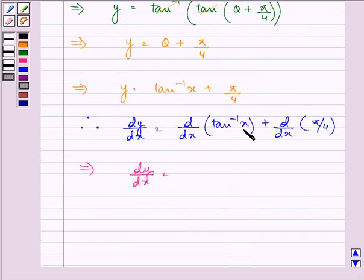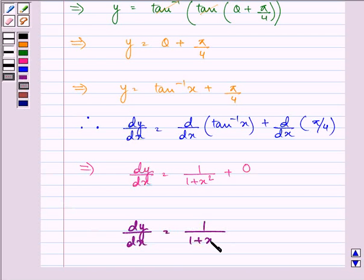derivative of tan inverse x is equal to 1/(1 + x²), plus derivative of a constant is equal to 0. So we have the answer to the given question as dy/dx is equal to 1/(1 + x²).